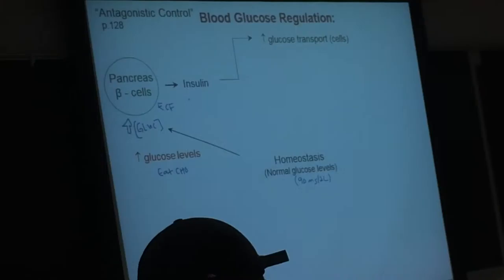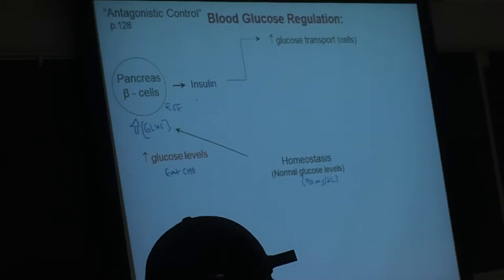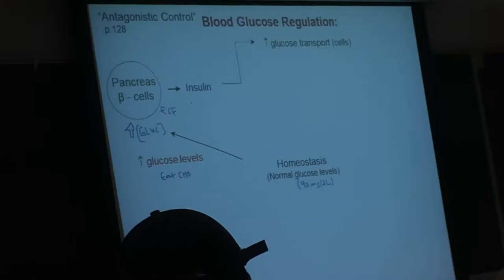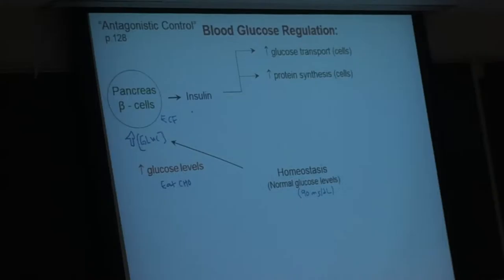So we've identified the gland that is producing the hormone. We've named the specific type of cell that produces the hormone. And we can name the hormone. The next thing is to ask, what are the target tissues for insulin? Which tissues is insulin acting on? We know insulin is going to ultimately reduce blood glucose levels, but we don't know yet through what mechanisms it will do that.